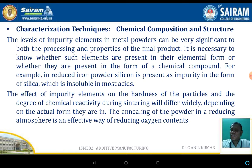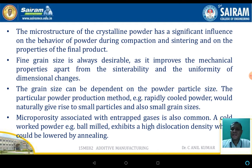The chemical composition and structure, along with the level of impurity elements in the metallic powder, can significantly affect both the processing and the properties of the final product. It is necessary to know whether such elements are present. The effect of impurities depends upon the hardness of the particle and the degree of chemical reactivity during sintering. The microstructure of crystalline powder has a significant influence on powder behavior during compaction and sintering.